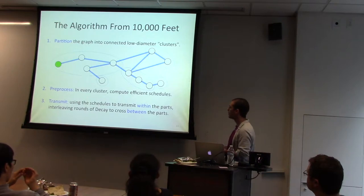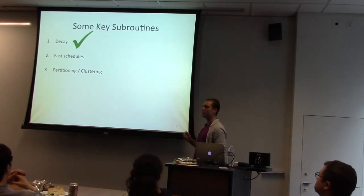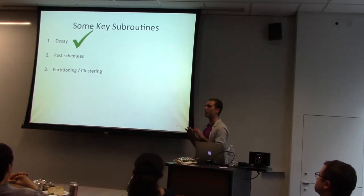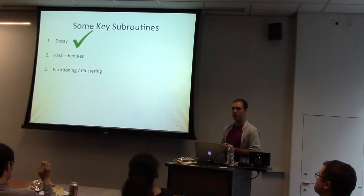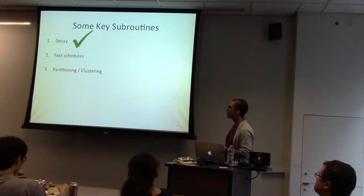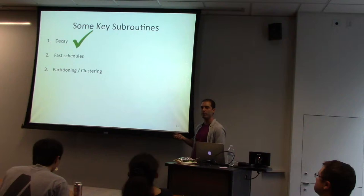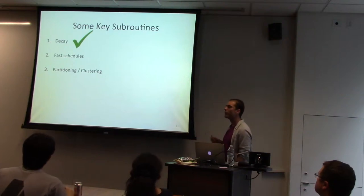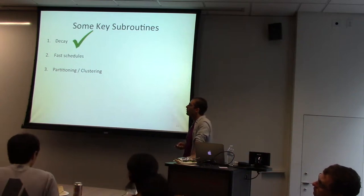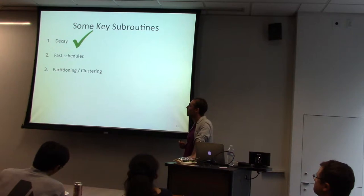There are a few key subroutines we'll rely on. We need Decay — we're actually using it to cross between clusters. We need fast schedules, which help us cross clusters relatively fast. And we need a low-diameter decomposition of the graph, some kind of clustering. The graph is not necessarily planar; we're trying to solve the most general thing.